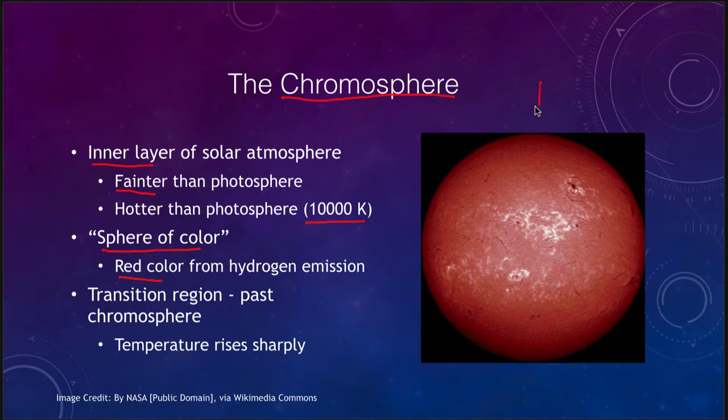We call that the sphere of color because of the red color of hydrogen emission and we see it here. We are looking at this not as an actual picture of the chromosphere. What we're looking at is the emission of the hydrogen line, so we are specifically looking just at the emission of the hydrogen line here and that gives us this very distinct coloring and why we call that the sphere of color. But we can also see many of the different areas that are active regions that appear very bright in this section. So the brighter areas here are actually regions of activity on the solar surface.